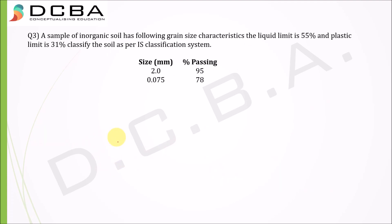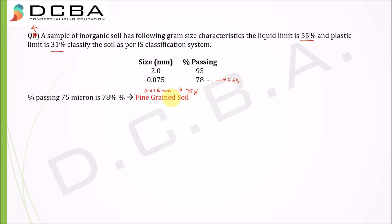Question 4: A sample of inorganic soil has a liquid limit of 55% and plastic limit of 31%. Percentage passing 2 mm is 95% and percentage passing 75 microns is also high, confirming it is a fine-grained soil. Since the liquid limit of 55% is greater than 50%, it is of high compressibility.